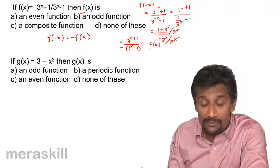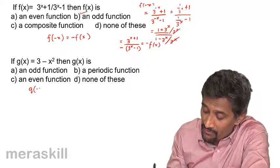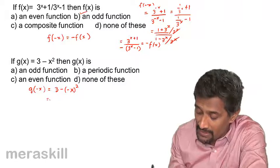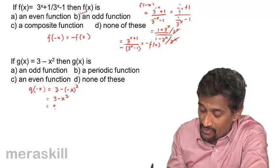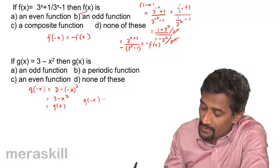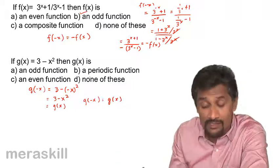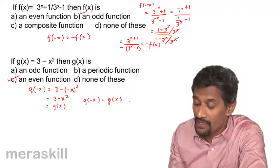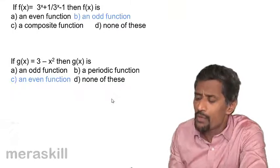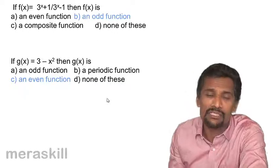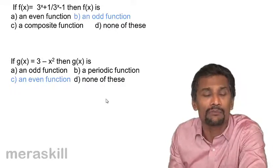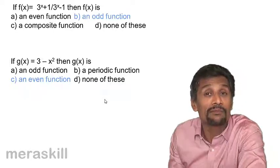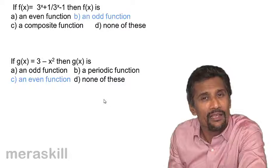Now for g(x) = 3 - x², we check g(-x): replacing x with -x gives 3 - (-x)² = 3 - x² = g(x). So g(-x) = g(x), meaning it is an even function. The first function is odd and the second is even. To classify a function, replace x with -x and simplify: if it remains the same, it is even; if it becomes the negative of the original, it is odd.